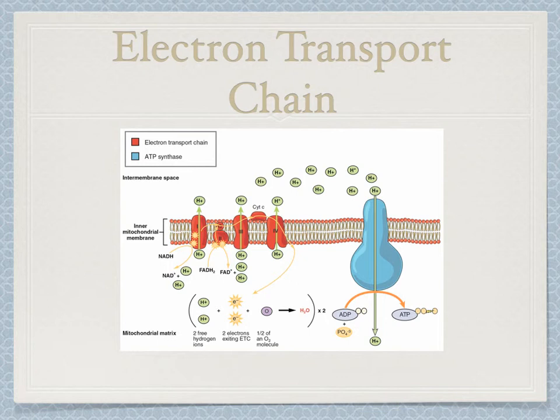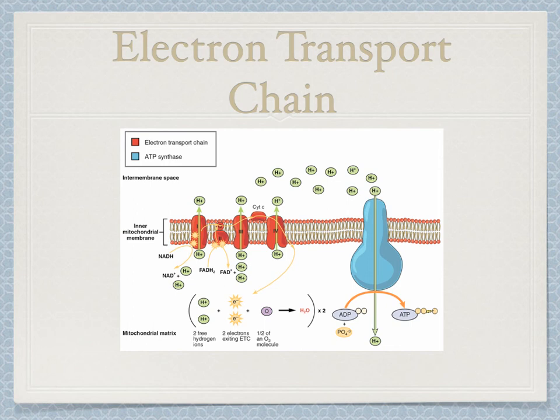The electrons then move through the electron transport chain, which is a system of four integral membrane complexes. All of these H+ ions are forced through the inner mitochondrial membrane into the inner membrane space through active transport. This creates a concentration gradient. The H+ ions then diffuse back through ATP synthase, allowing it to function by converting ADP into ATP. The electrons and H+ are accepted by O2, creating H2O as a byproduct.